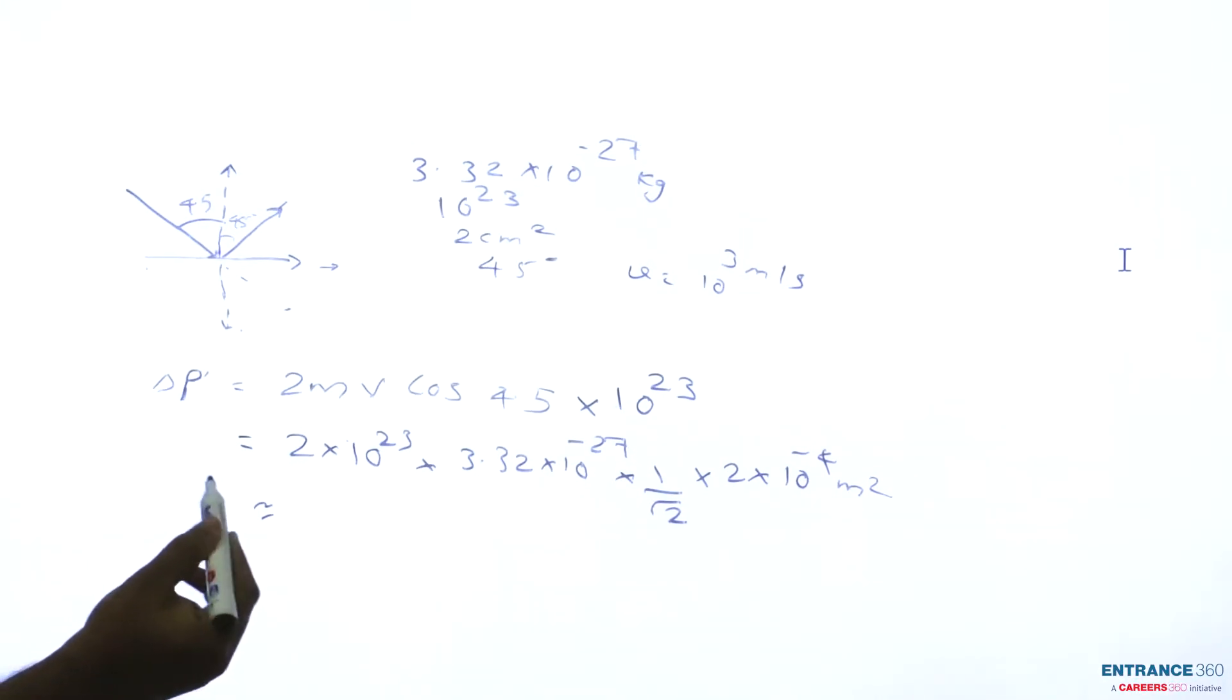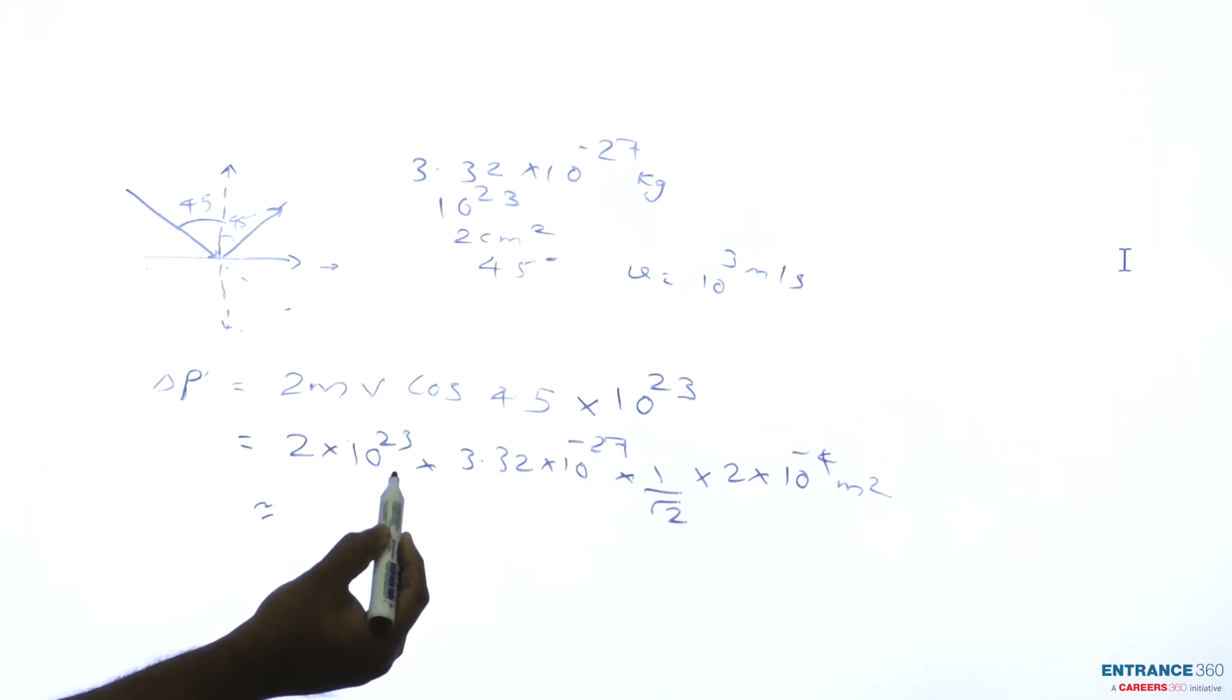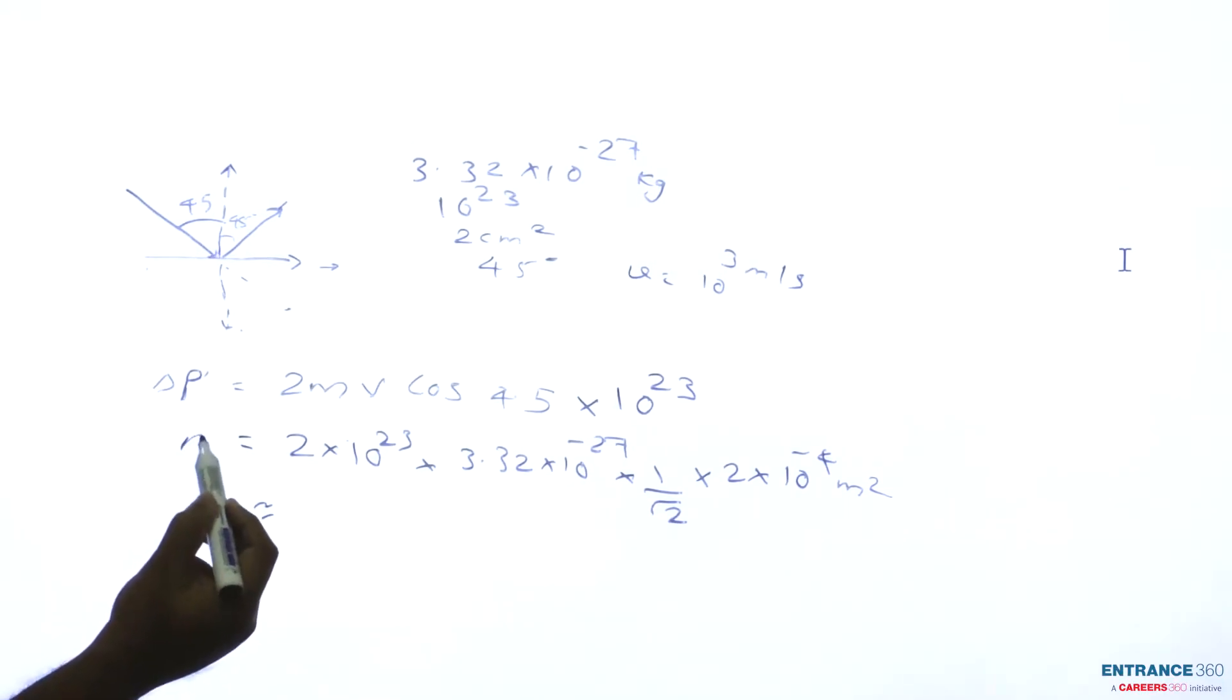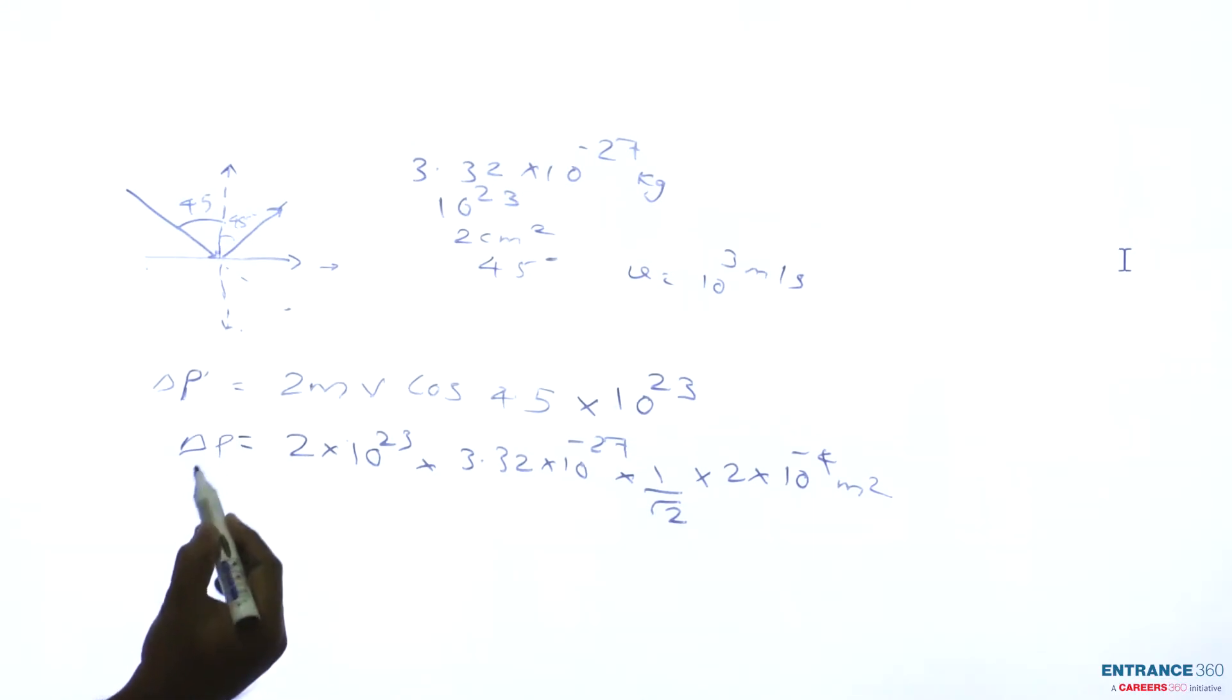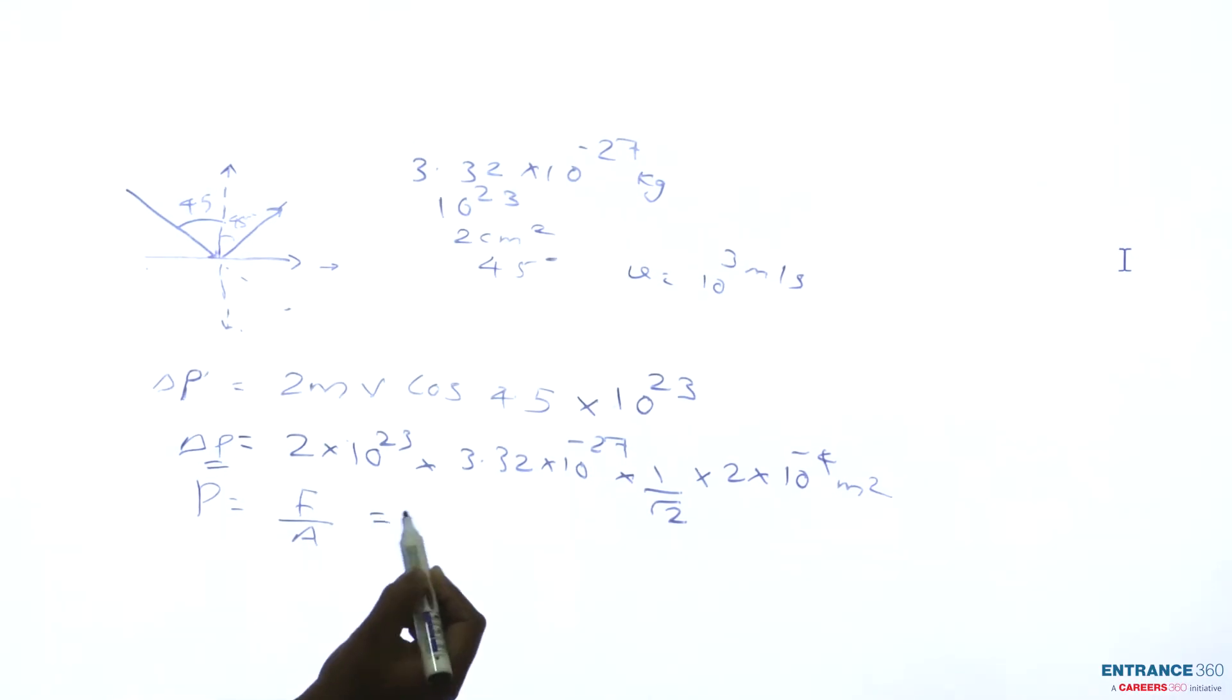Since 10^23 molecules per second are striking the wall, rate of change of momentum is given by this formula. Now we have to find pressure: pressure equals force by area, which is rate of change of momentum by area.